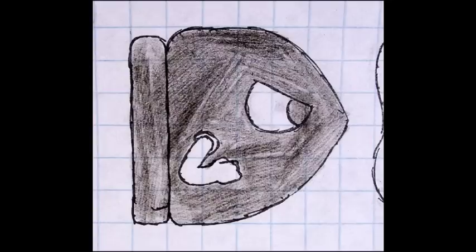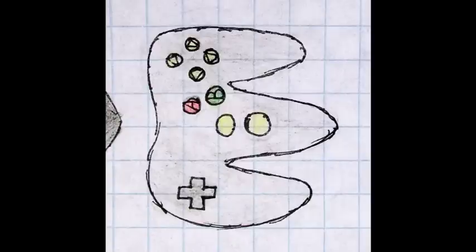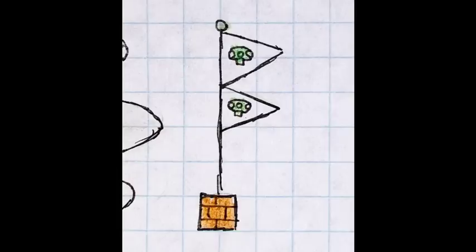D is a bullet bill with freakishly tiny arms. E is a Nintendo 64 controller. F is one of the ending flags from the first Mario Brothers game, and it inexplicably has two flags. Yes, it usually has one.